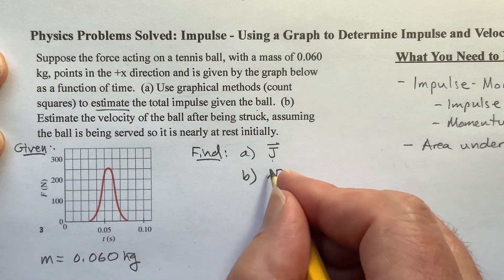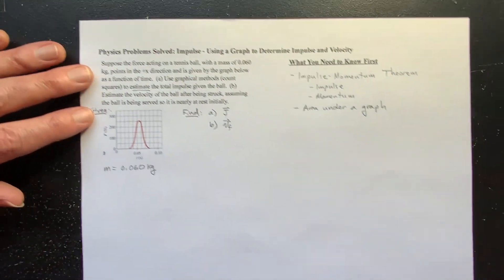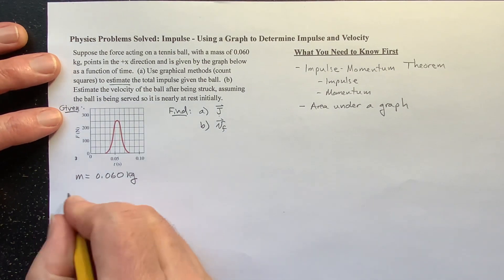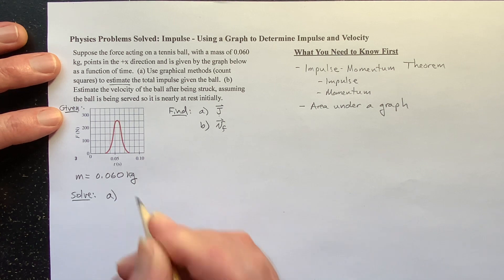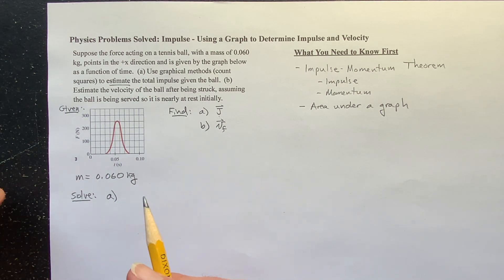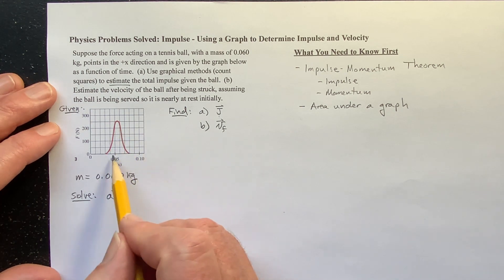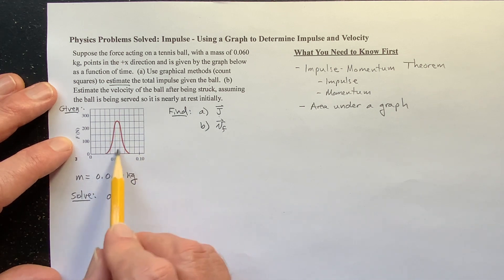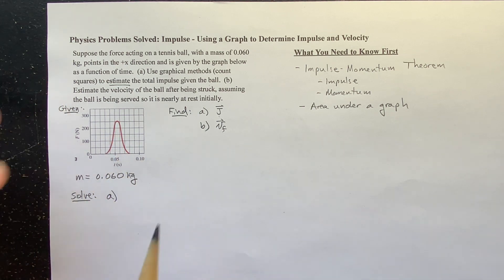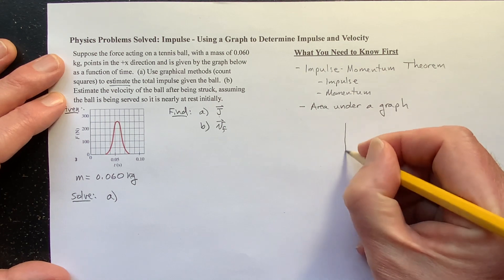So let's solve it. Now, whenever you have a quantity that is the product of another quantity, you can use the area of the graph where you plot one quantity as a function of the other. And the area underneath that graph represents the quantity that is the product of the two other quantities. Now you've done this before, right?